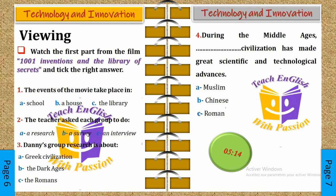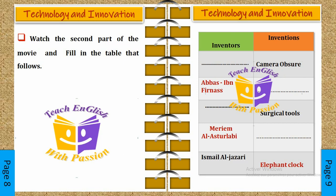The second phase is 'during viewing.' At this stage, learners watch the movie entitled '1001 Inventions and the Library of Secrets' to do a number of activities. Since this movie is a bit long — about 12 minutes — I have decided to split it into two parts. In the first activity, learners watch the first part of the movie and choose the correct answer for the four sentences given.